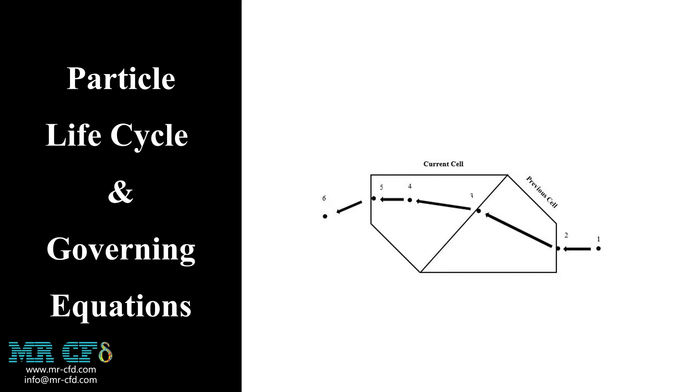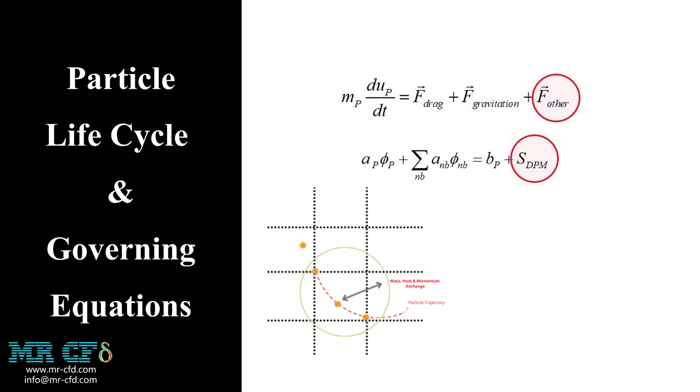Now we want to seek for the governing equations. The governing equation is based on Newton's second law. As you can see, MP is the particle mass. UP is the particle velocity. F_drag is the drag forces acting on the particle.